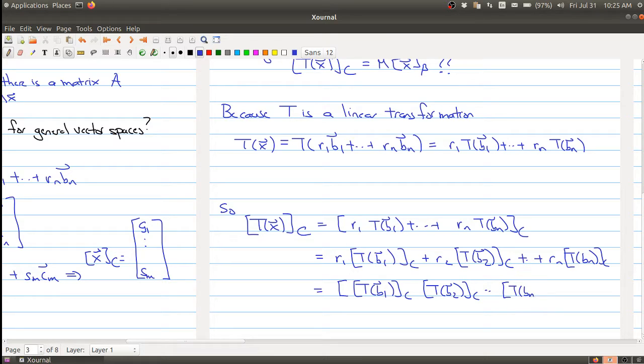And this gives me T(bn), that's my last column, times the vector R1 up to Rn. And what you want to notice is that this last little part, the R1 through Rn, is actually the B coordinate of the X.